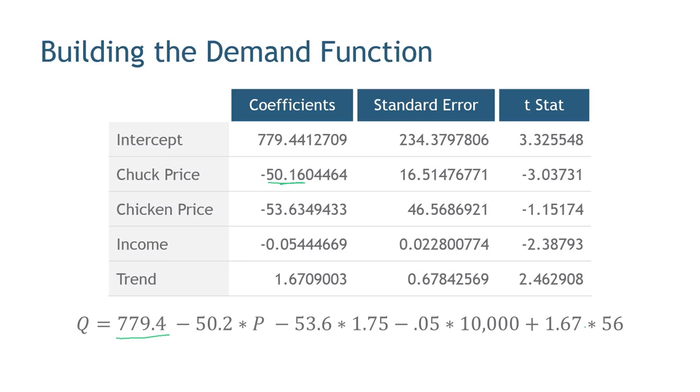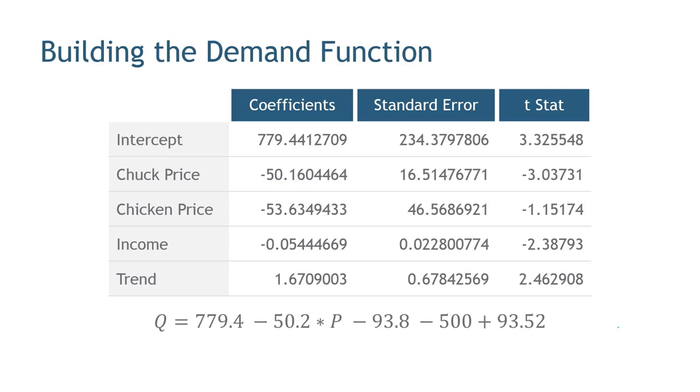But notice, the only thing I don't know here is price. I know the price of chicken. That's $1.75. So I can also substitute that in. I also know the income is stable around $10,000. I can substitute that in. And I know that I'm in the 56th month of the data. So I can substitute that in. And what that's going to allow us to do is simplify this whole thing a lot.